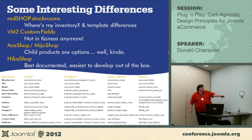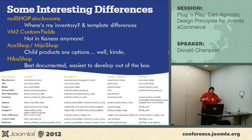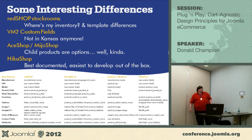There are differences — like UPC: you use custom fields for some carts, while one of them has its own UPC field. Parent-child relationships and parent ID — not applicable for some. Short description — some have it, some don't. There are a lot of differences. Some things are similar across all Joomla carts, but some things are different, and those are the things you've got to watch out for.